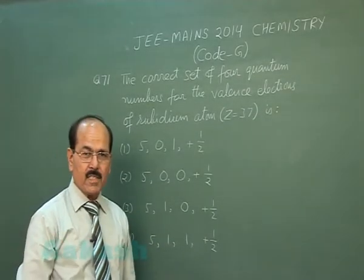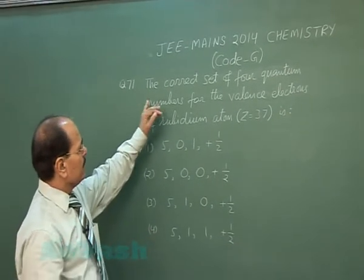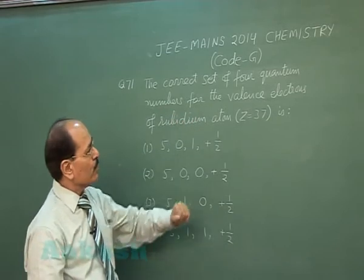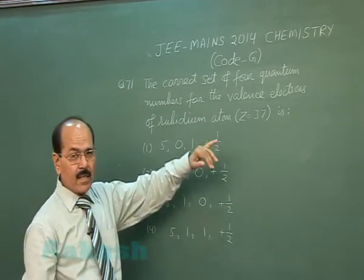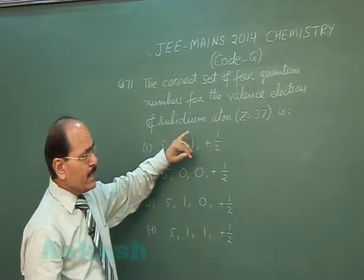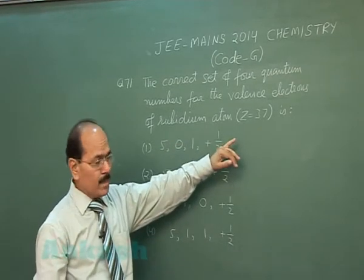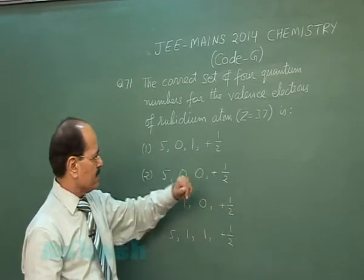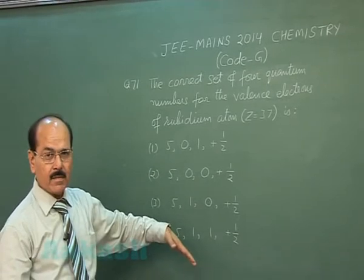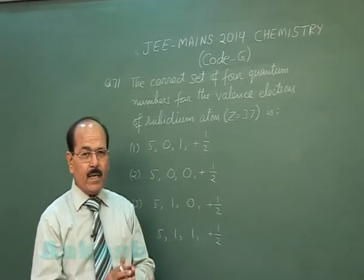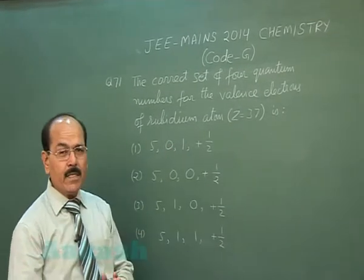Question number 71 asks for the correct set of 4 quantum numbers for the valence electron of rubidium atom having atomic number 37. Four options are given. We will look at the electronic configuration of rubidium atom.